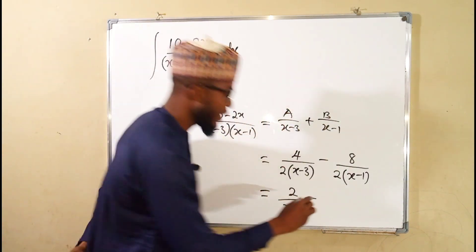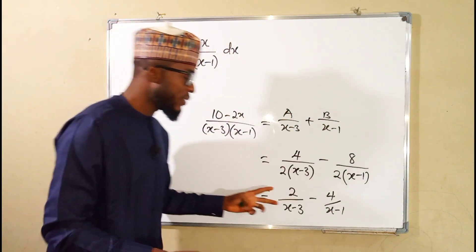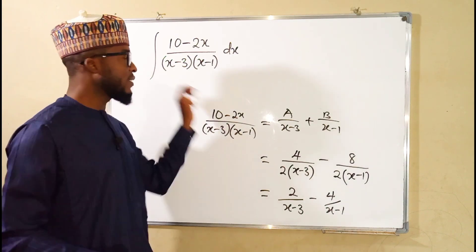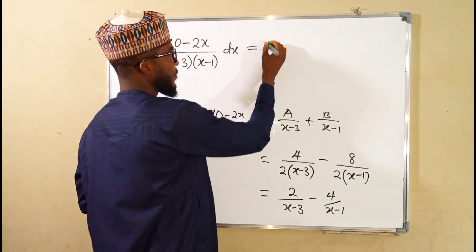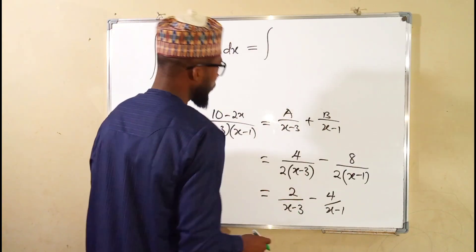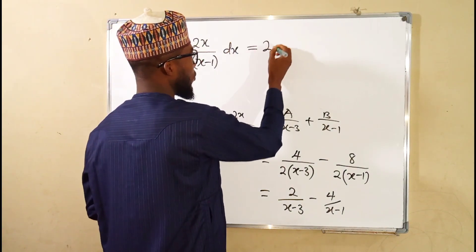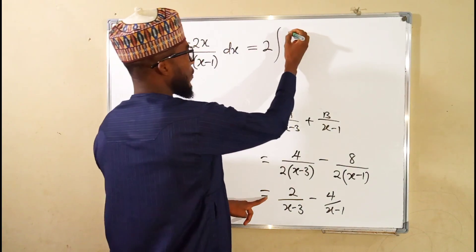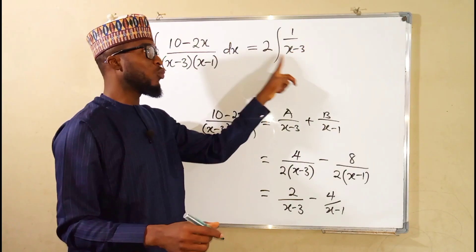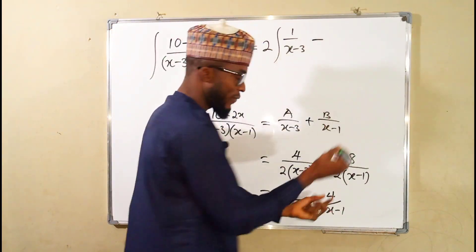Negative 2 goes into 8 negative 4 times, giving minus 4 over (x minus 1). This is the partial fraction decomposition. Instead of the original compound fraction, we can write the integral of these two terms independently. We can factor 2 out, giving 2 times the integral of 1 over (x minus 3), minus 4 times the integral of 1 over (x minus 1).